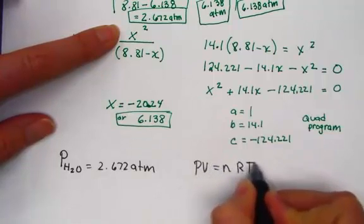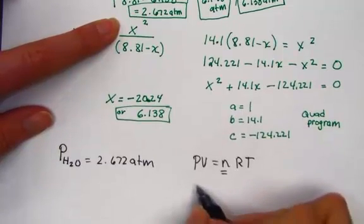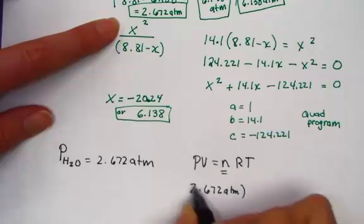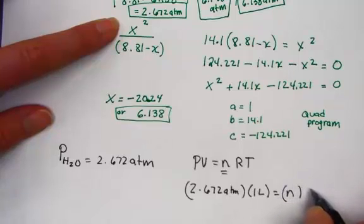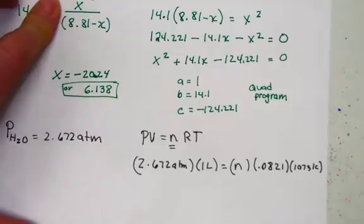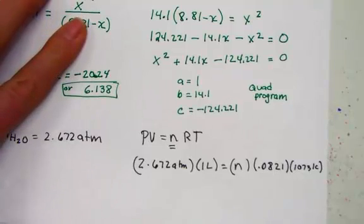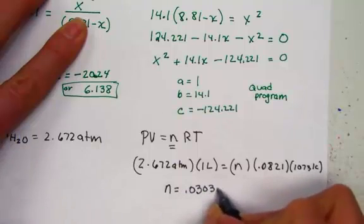If PV equals nRT, let's pull out n, the number of moles of water at the equilibrium. Now the partial pressure we just solved for 2.672 atmospheres. The volume of our container was given to us as 1 liter. R is our gas constant, 0.0821. And the Kelvin temperature was determined to be 1073 Kelvin units. Pulling out for n, the number of moles will hit 2.672 divided by 0.0821 divided by 1073 Kelvin units. The number of moles of water, 0.0303 moles of water.